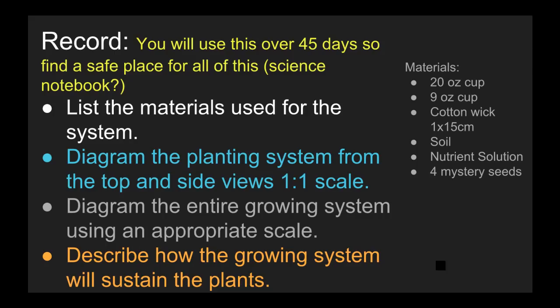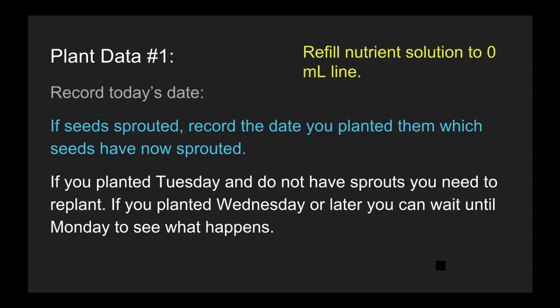This screen you've seen before — about a 45-day project. Make sure you've got your materials list. You've got a diagram with the top and side views of the growing system. The description at the bottom we'll get to after you complete task number one on Classroom. It's an article that talks about the nutritional needs of plants, and that'll give you a better understanding about what a plant needs to survive.